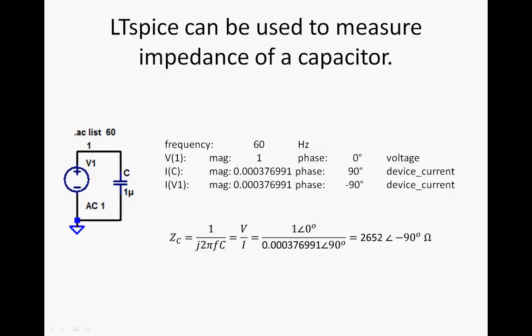Now we can do this with a capacitor where the magnitude is still 1, but the magnitude of the current is 0.3769 milliamps with a phase of 90.